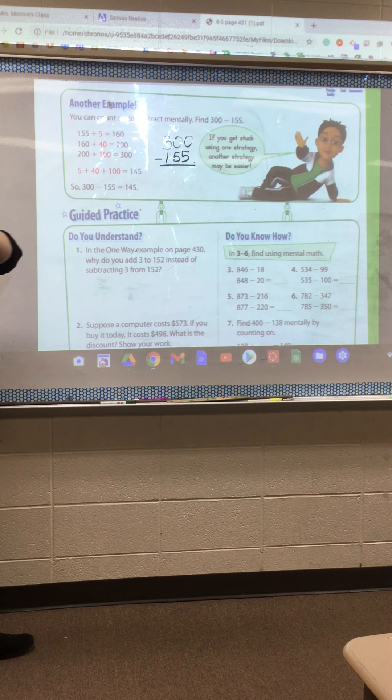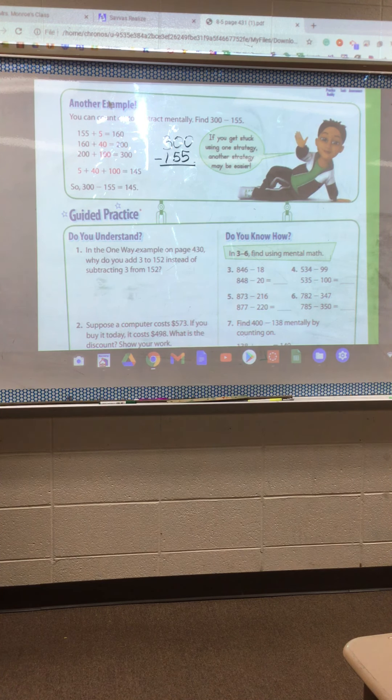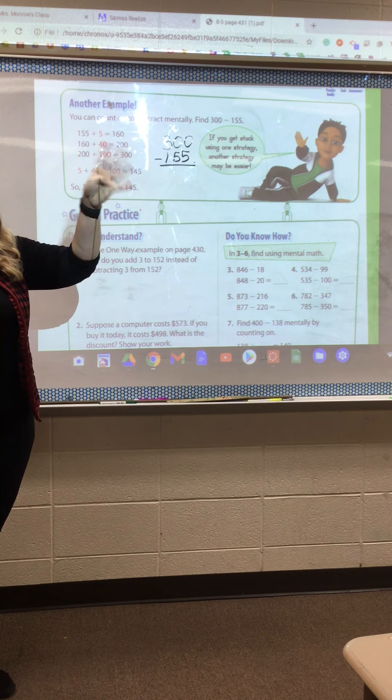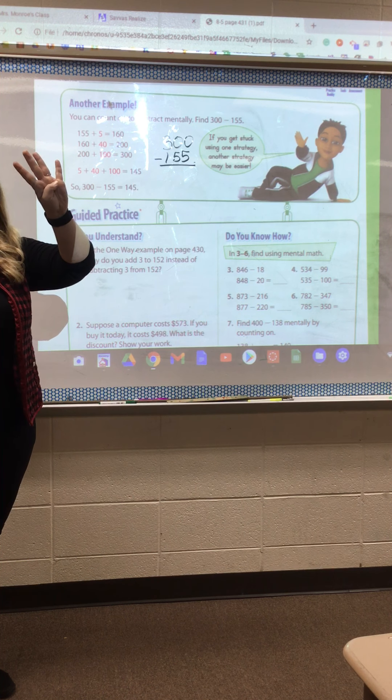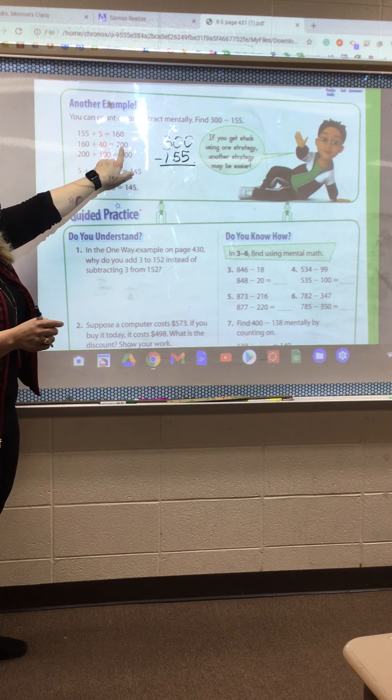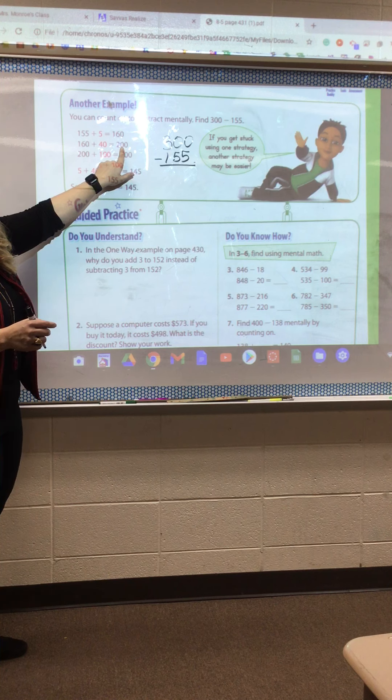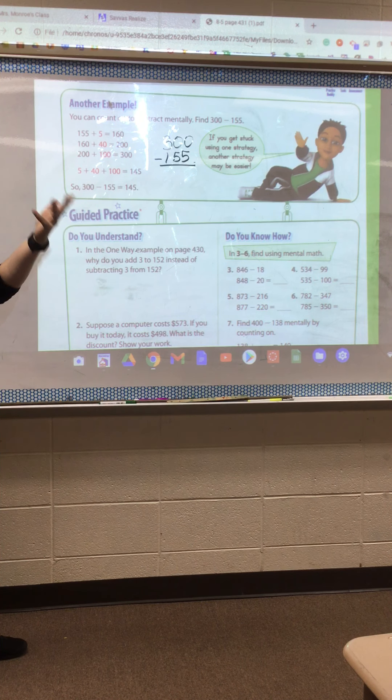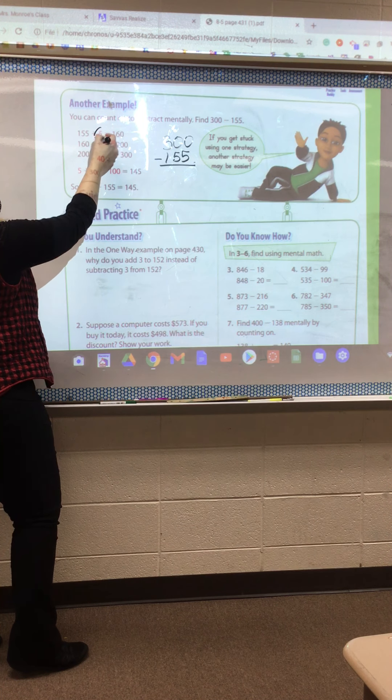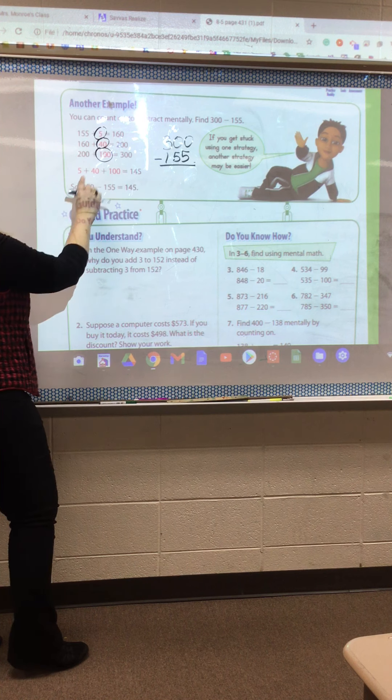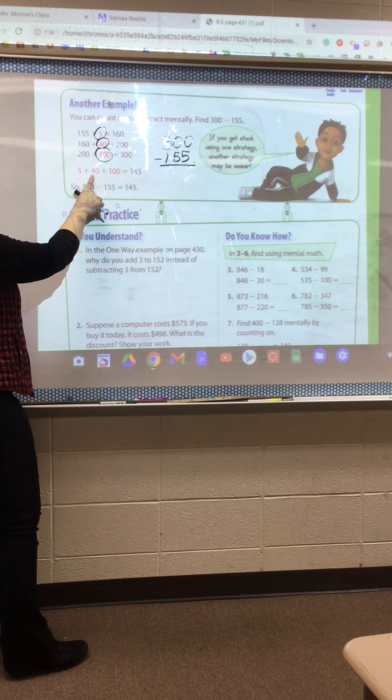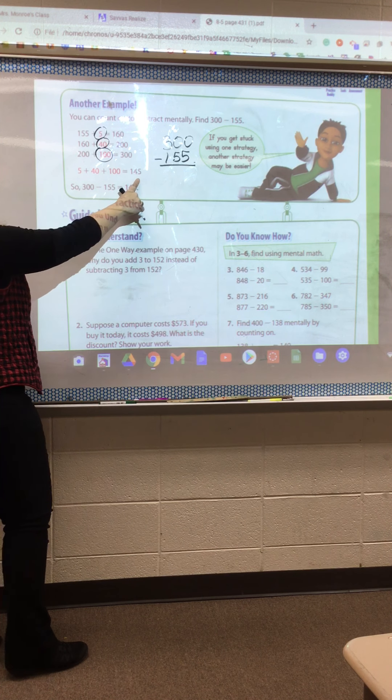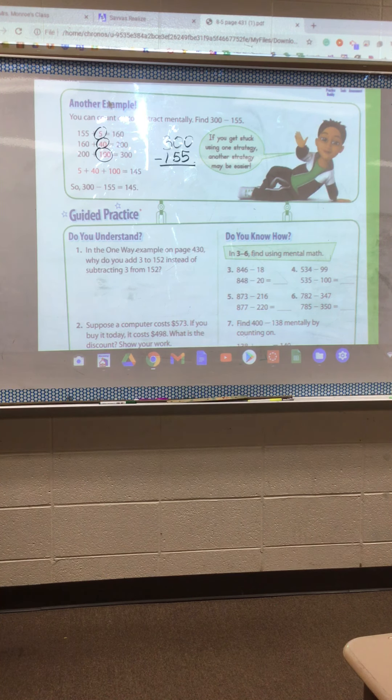Now I'm going to count by 10s up to 200. So I'm starting at 160. I'm going to go 170, 180, 190, 200. Each of these are a 10. So I've got four 10s, which is 40, and that gets me to 200. From 200, I've got to get to 300. I'm going to count by 100s now. How many do I need? One. So then these numbers right here, I'm going to add up. I've got 100 plus 40 is 140, and then another 5. I've got 145. So that's counting on.